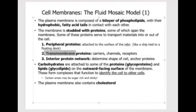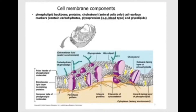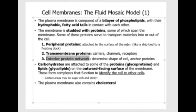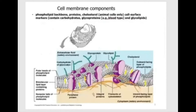The second type is transmembrane proteins, also known as integral proteins, because they span through the entire cell membrane — they go all the way through, not just staying on the surface. The third type is the interior protein network. These proteins are located inside the cell on the interior of the cell membrane. They determine the shape of the cell and can also anchor other proteins.